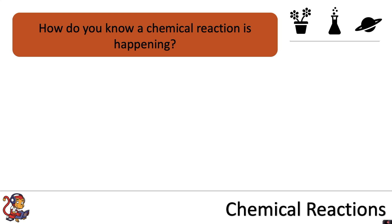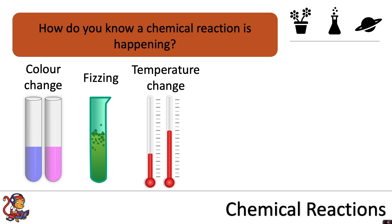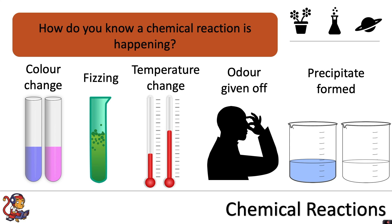There are five different things that you can look for. The first is a colour change — for example, here it's gone from lilac to pink, suggesting a chemical reaction is happening. Fizzing means that a gas is being given off, and this often means a chemical reaction is happening. You may well observe a temperature change — the temperature might increase or decrease. You may notice an odour given off, or you may notice a precipitate formed. This is a solid that forms in the reaction and causes the reaction to go cloudy.